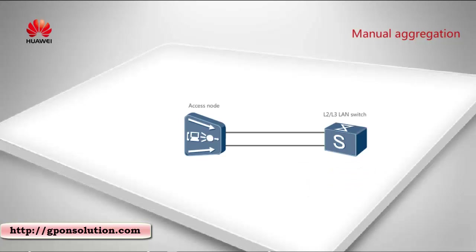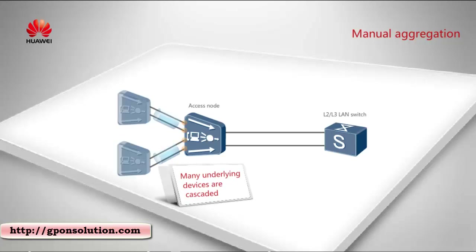Scenario 2: the access device functions as a convergence node for multiple lower layer devices, and the aggregation group is configured on the downstream cascading ports of the access device. In Scenario 2, if LACP aggregation is used, the devices on both link ends will frequently exchange protocol packets, resulting in high CPU usage. Therefore, manual aggregation is recommended.